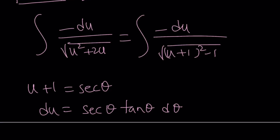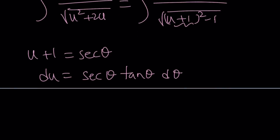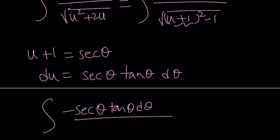Plugging these in: when you replace u plus 1 with secant theta, you get secant squared minus 1, which is tangent squared. The square root of tangent squared is tangent. So we end up with negative secant theta tangent theta d theta divided by tangent theta — and the tangent cancels out, leaving us with the integral of negative secant theta.